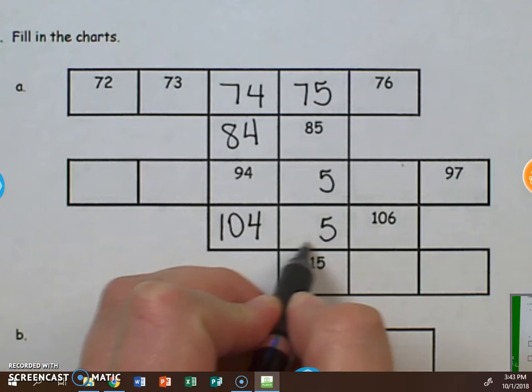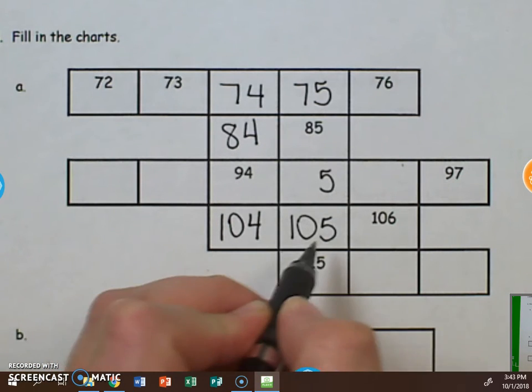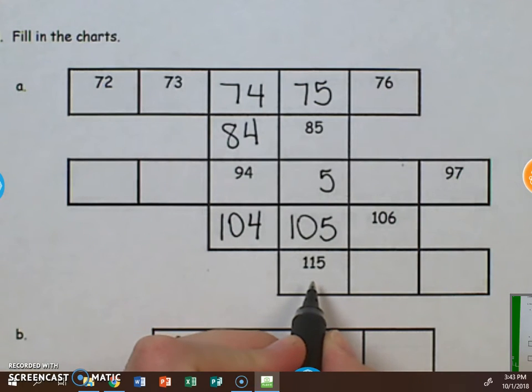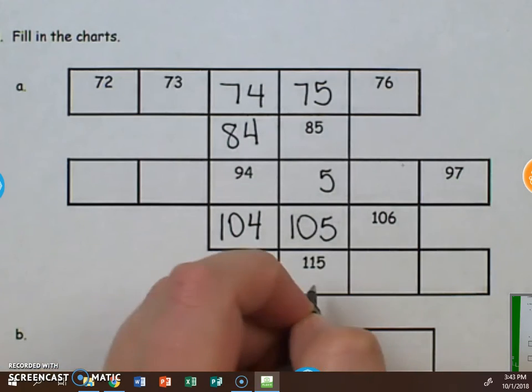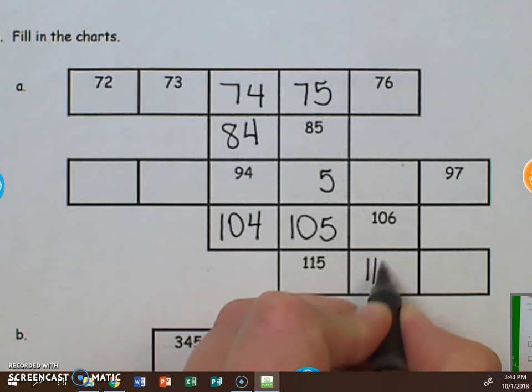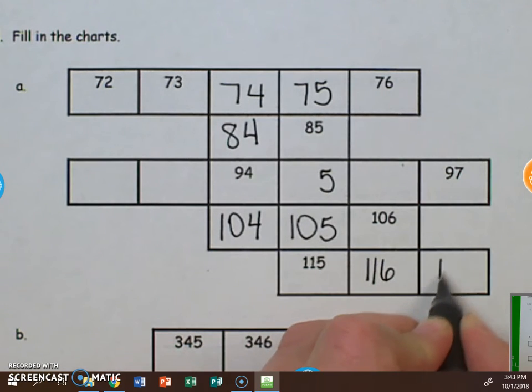104 plus one more, 106. If we come down here we have 115. One more is 116. One more is 117.